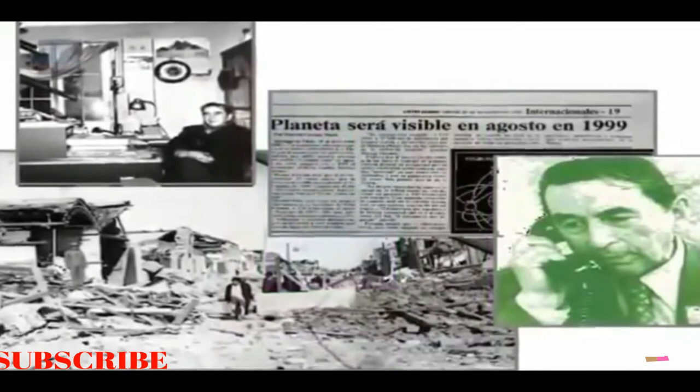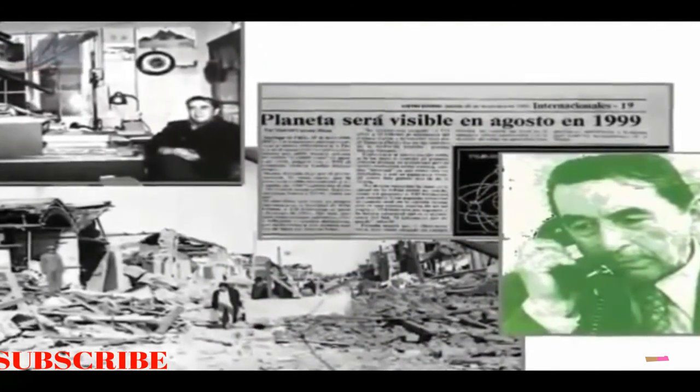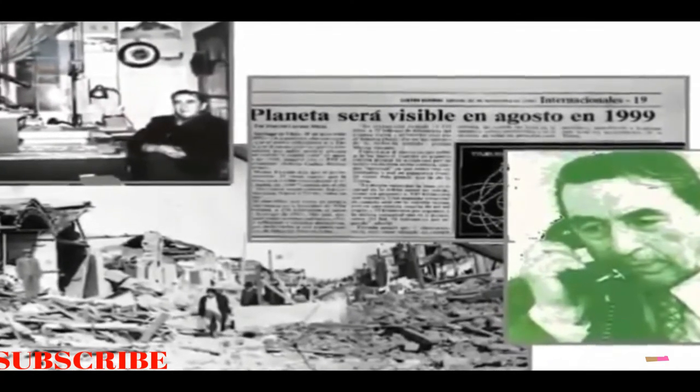At number 4 on our list, Carlos Munoz Ferrada. His name is forever linked to Nibiru. Carlos Munoz Ferrada predicted with extraordinary accuracy numerous earthquakes in South America during the last century. He did this by making direct correlations between specific astronomical phenomena and various catastrophic earthquakes and volcanic eruptions.